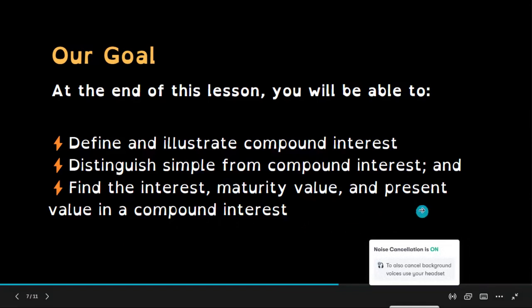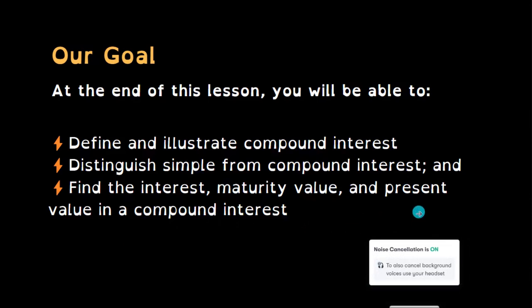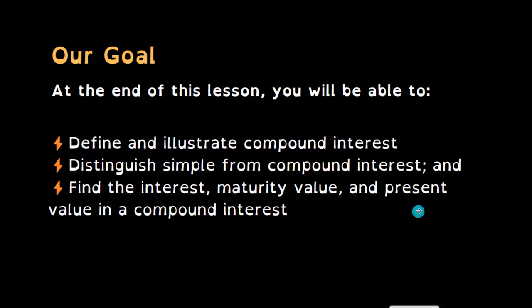There are two types of interest. Simple interest is basically computed annually — only one term. Compound interest, on the other hand, can have different terms. At every period, the principal amount changes in compound interest.